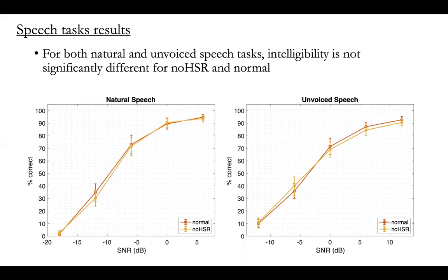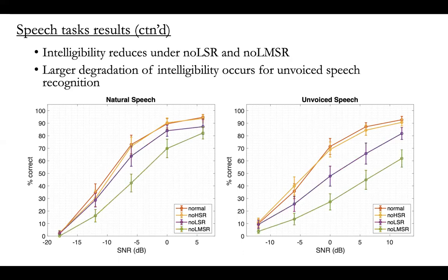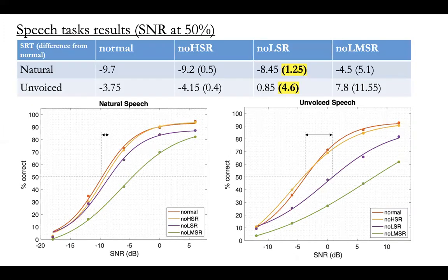For the speech tasks, we observed a similar pattern: removing all high spontaneous rate fibers did not change speech intelligibility much from normal conditions. However, removing low spontaneous rate fibers to create cochlear synaptopathy caused performance to get slightly worse for natural speech recognition and a lot worse for unvoiced speech recognition. Looking at the SNR at 50% intelligibility, the degradation in SNR50 was about 1 dB for natural speech recognition and about 4.6 dB for unvoiced speech recognition.